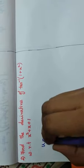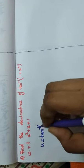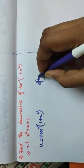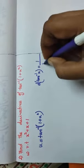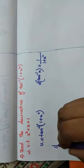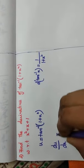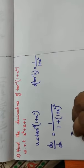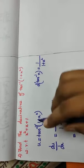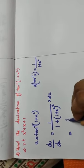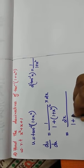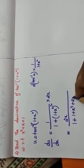Now for our second problem: find the derivative of u = tan⁻¹(1 + x²). The differentiation of tan⁻¹(x) is 1/(1 + x²). So differentiating with respect to x: du/dx = 1 divided by (1 + (1 + x²)²) into the inner derivative 2x. Expanding using (a+b)² formula: 2x divided by (1 + x⁴ + 2x²).